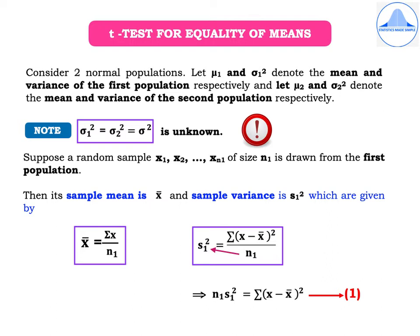Let us consider two normal populations. Let μ1 and σ1² denote the mean and variance of the first population respectively, and let μ2 and σ2² denote the mean and variance of the second population respectively. Note that the population variances are equal, i.e., σ1² = σ2² = σ², and this value is unknown. Even under the t-test for single mean, σ² or σ is unknown.